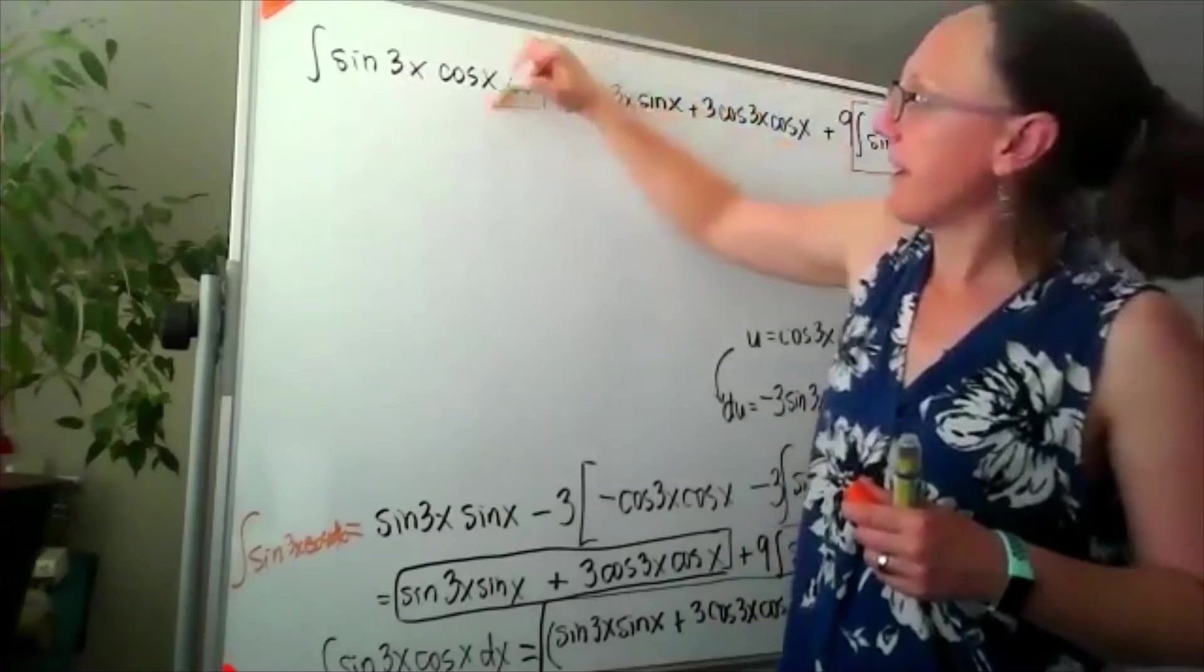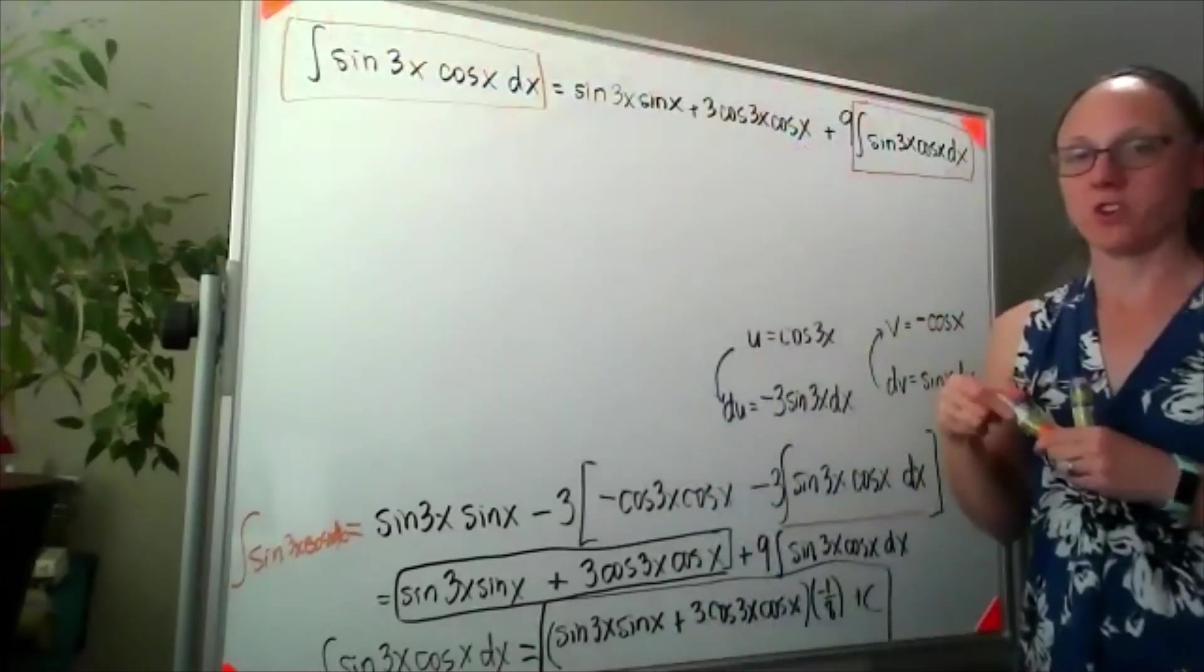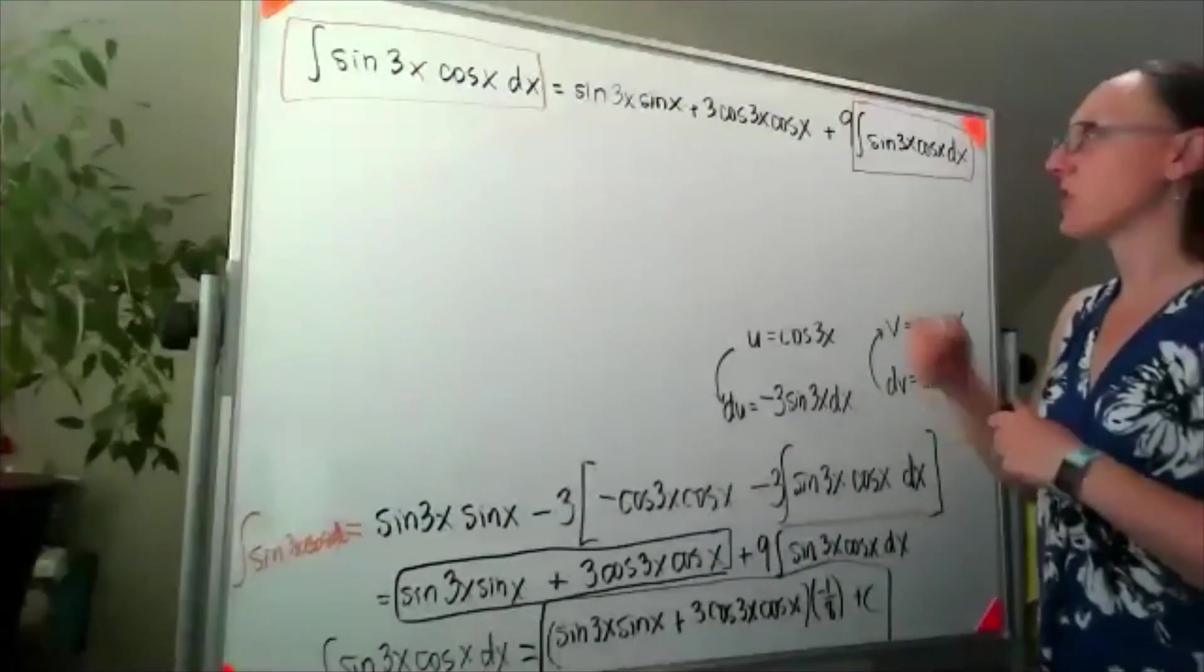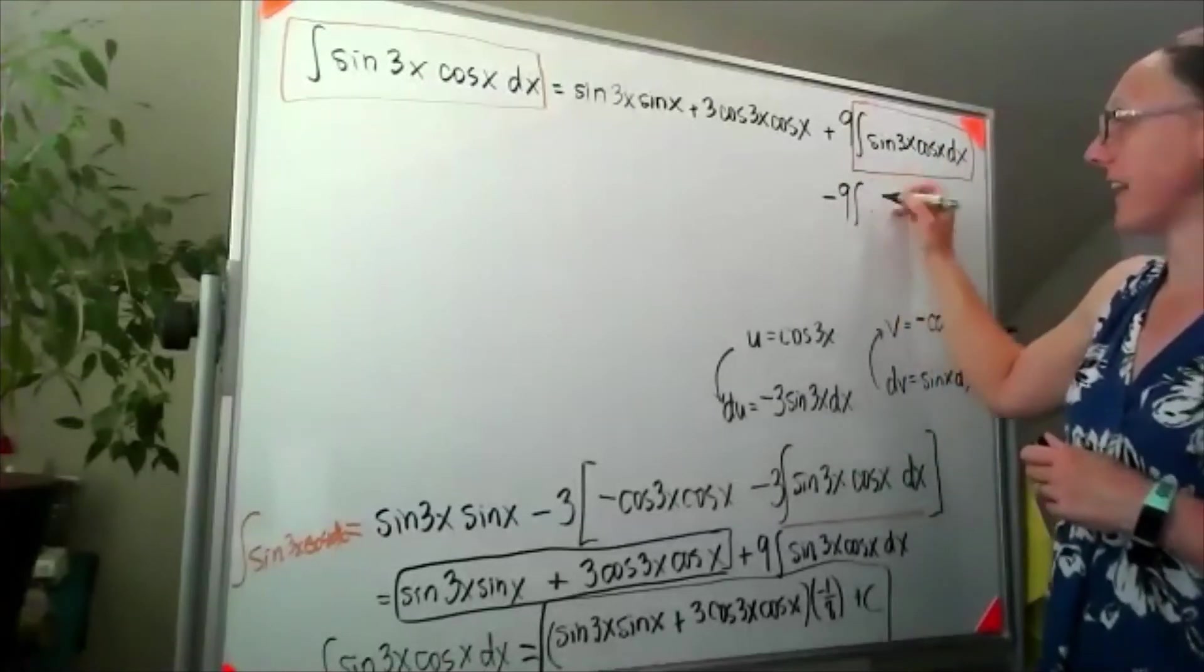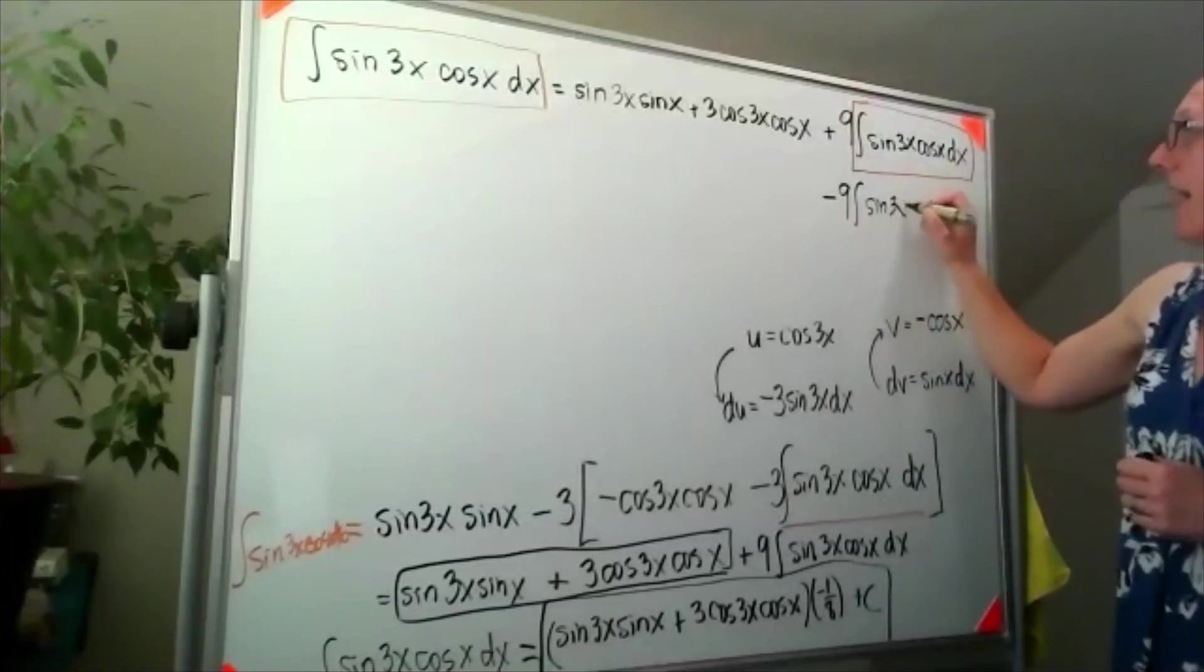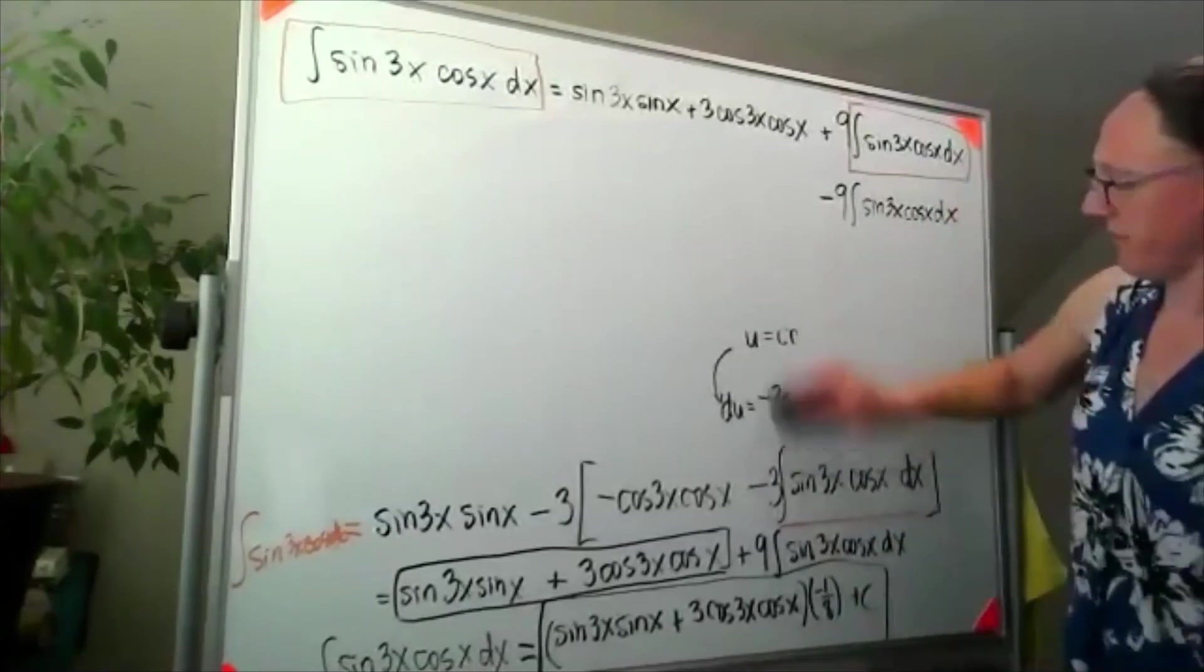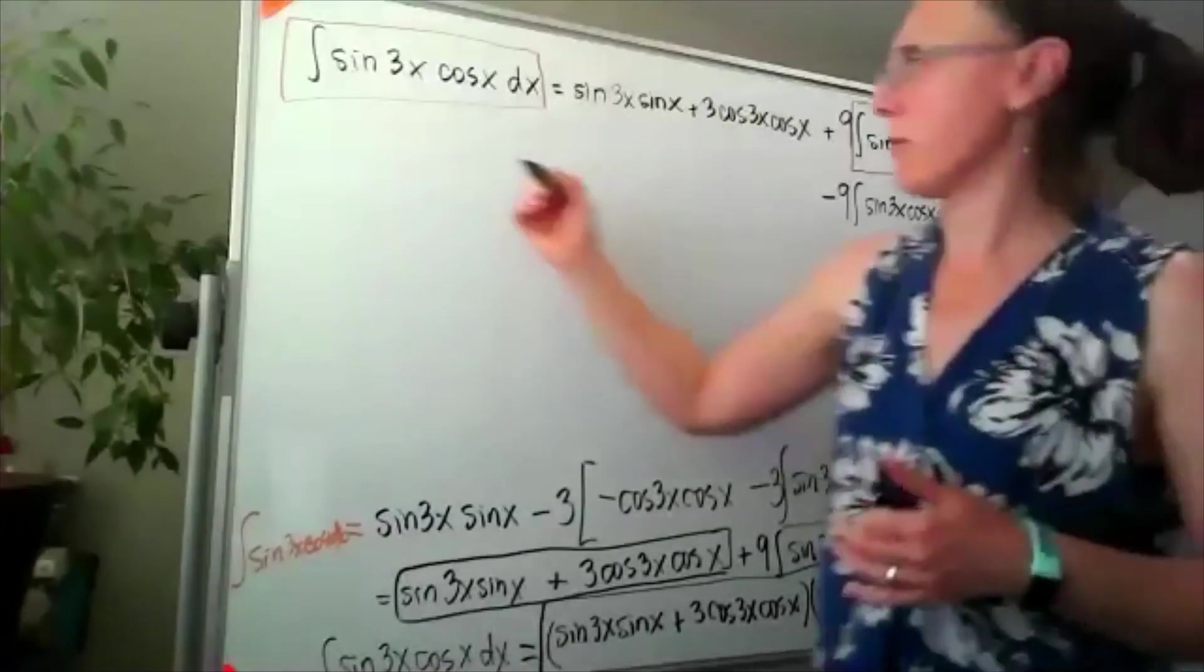So our trick is to actually subtract 9 copies of that integral - 9 times sine 3x cosine x dx. Let me get more of this out of the way. I'm going to subtract that from both sides.